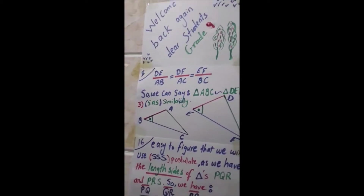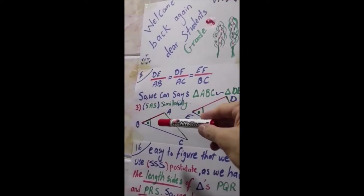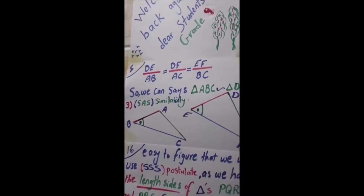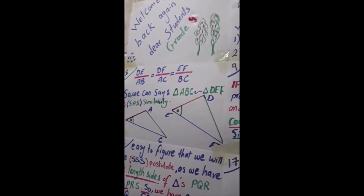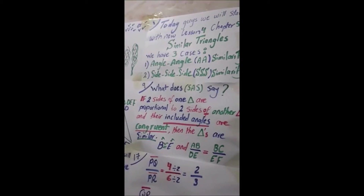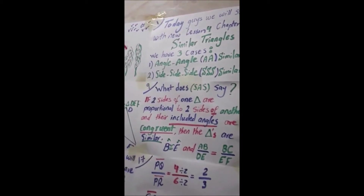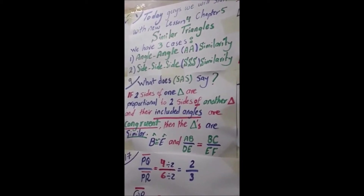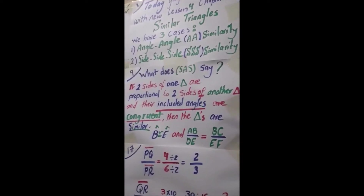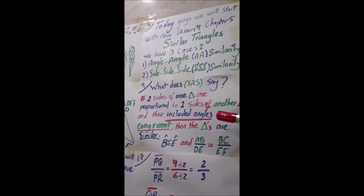Now let's go to the last case: side-angle-side similarity. We have triangles ABC and DEF, and it looks like angle B and angle E are congruent. Side-angle-side says: if two sides of one triangle are proportional to two sides of another triangle and their included angles are congruent, then these two triangles are similar. The included angle is very important.